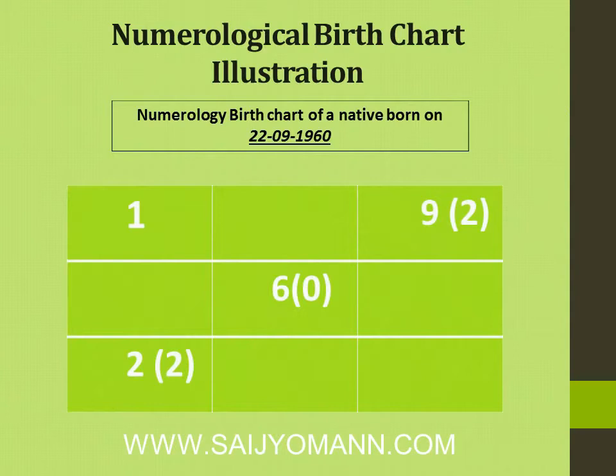For example, a date of birth is 22.09.1960. Starting with the date: in the last row, the first position is for 2. In this date of birth you have 22 — two 2s — so you write 2 there in the blank chart and put 2 in brackets to show two occurrences. Next comes the month, September — 9. Where does 9 go? It goes in the right-hand corner of the top row. So you place 9 there because it is September.